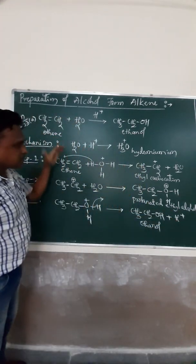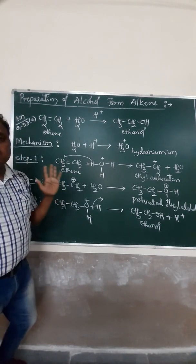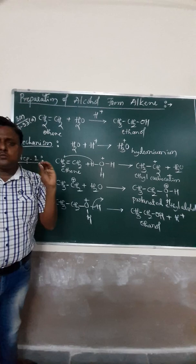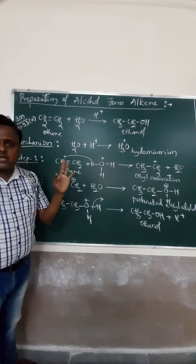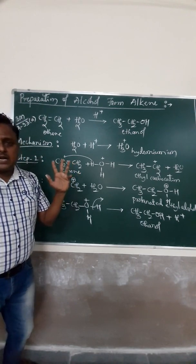And this is the first mechanism of this chapter. Friends, keep in your mind, in organic chemistry, five mechanisms are mentioned. Two from haloalkene, two from alcohol, and one is aldehyde.